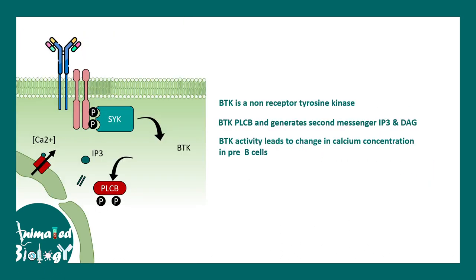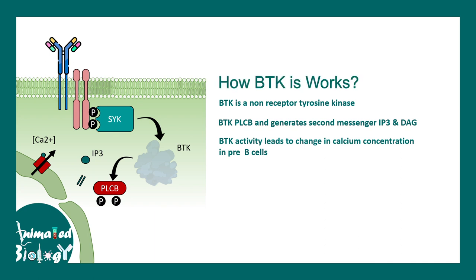BTK regulates several parts of important signaling pathways. Specifically, BTK leads to activation of phospholipase C beta, thereby increasing the calcium levels in the B cells, and that leads to several downstream changes. But once BTK is absent, all these factors are not happening.